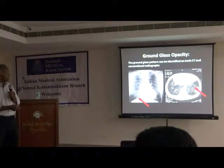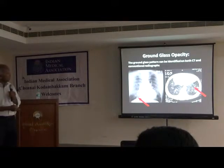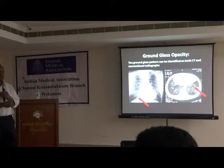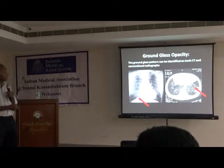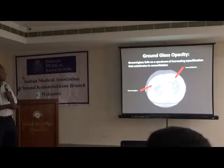Ground glass can be seen both on CT scan, where it is easier to identify, and on a conventional chest X-ray, where you see a kind of haziness. Sometimes this can be due to fluid — if you take a chest X-ray of a person lying down, you may find a haziness that looks similar, so we need to distinguish that from true ground glass opacity. This is the consolidation which is the denser form of the ground glass pattern.